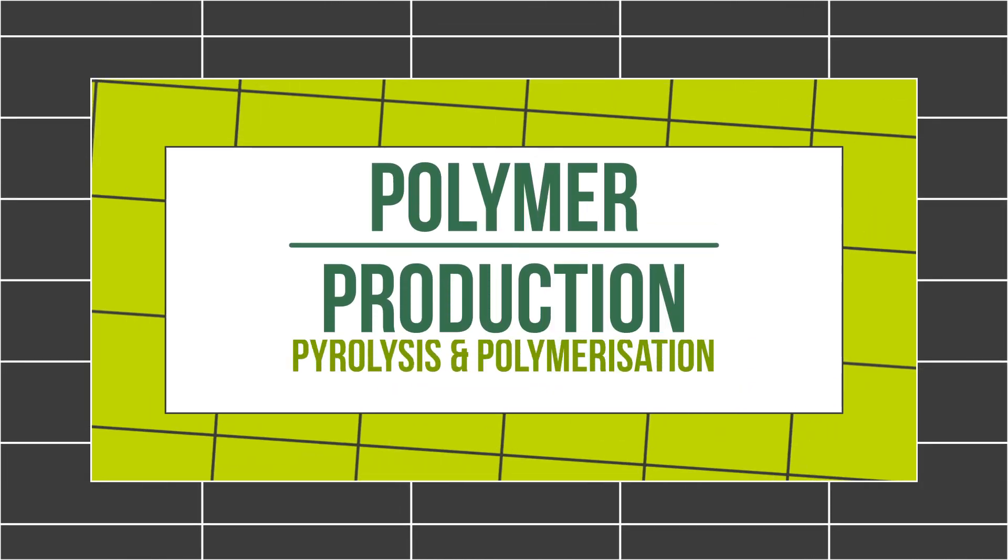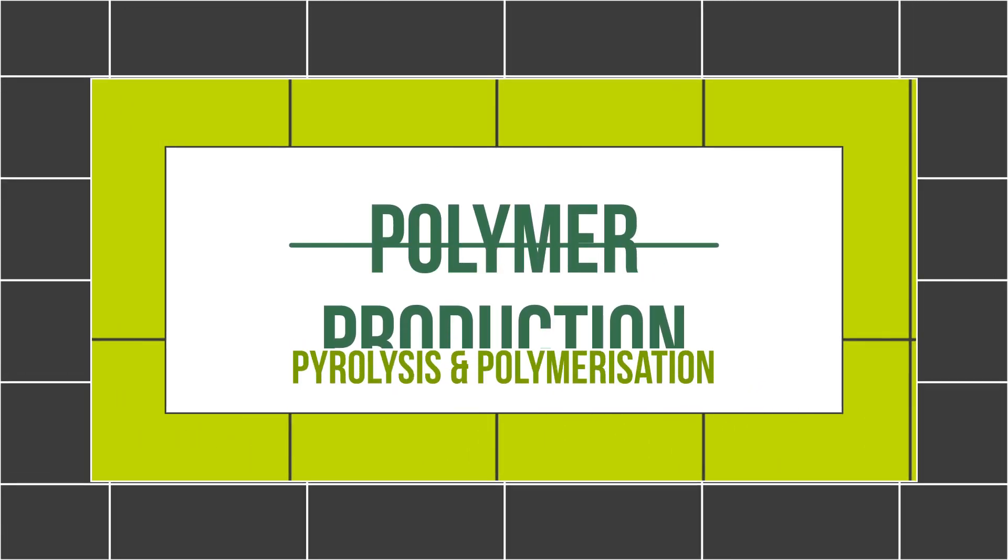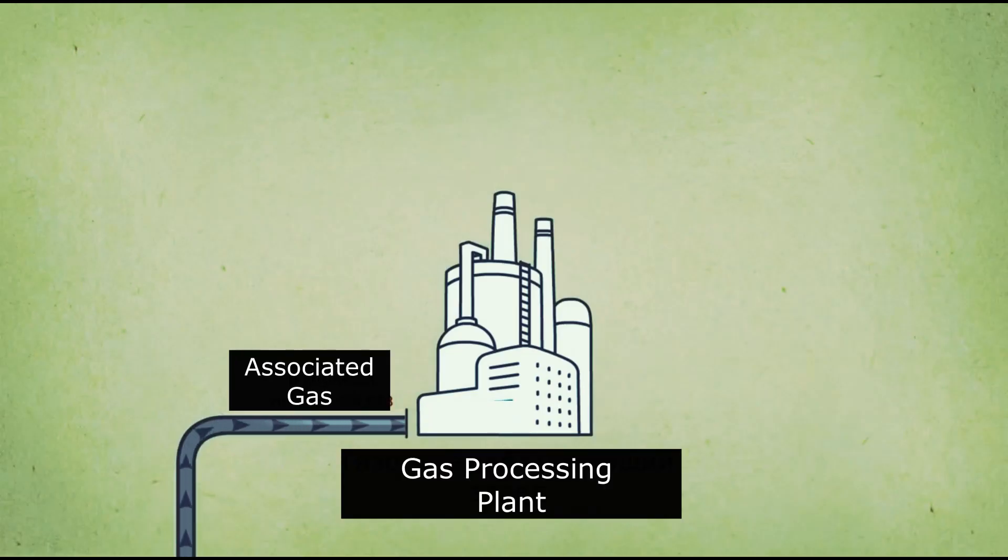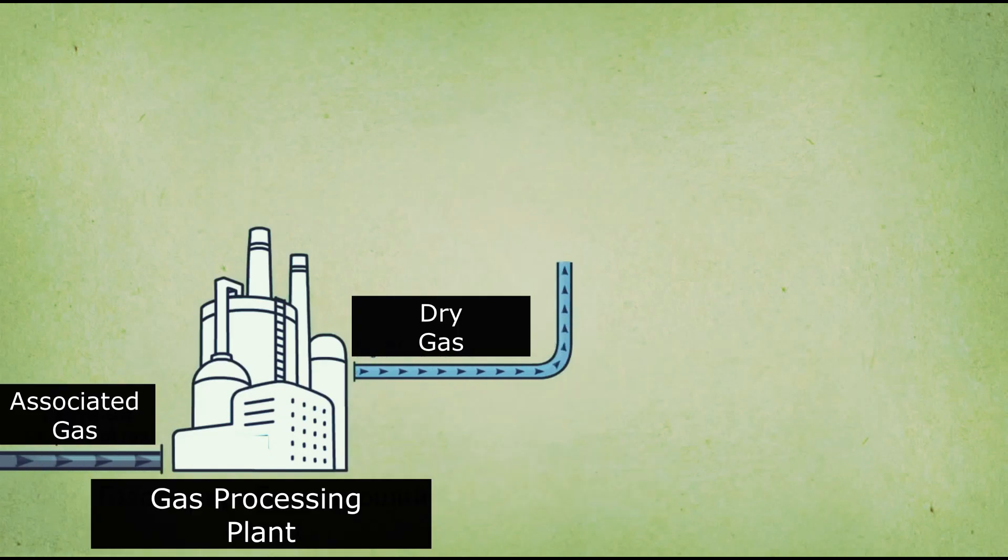Pyrolysis and polymerization as a part of polymer production. As we told in previous videos regarding the associated gas, at the gas processing plant this raw material is divided into two basic components.